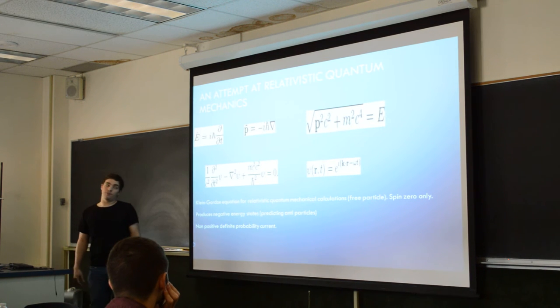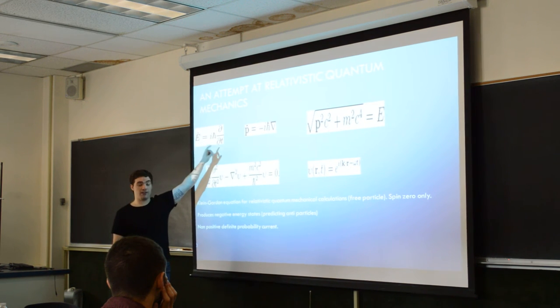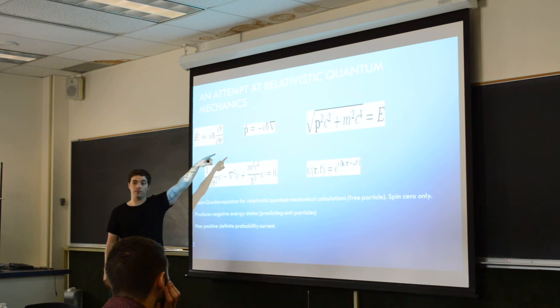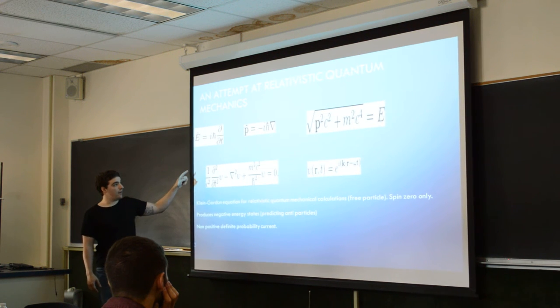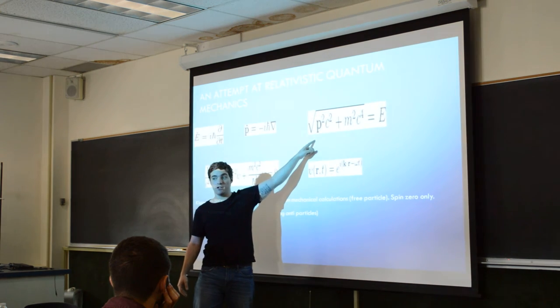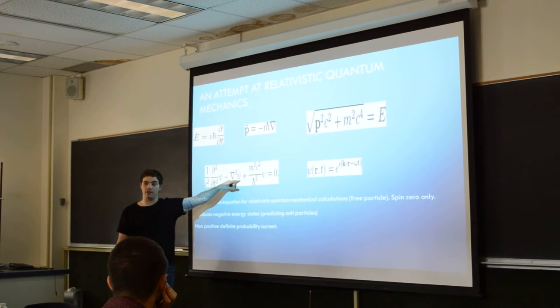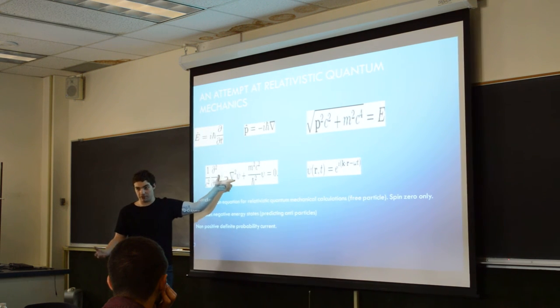The Klein-Gordon equation is a relativistic wave equation. It was basically an attempt to unify relativity and the Schrödinger equation together. You can take your regular energy operators and momentum operators from the Schrödinger equation, plug those into this relativistic energy equation, and do some algebra. You come up with this equation right here, but this is neglecting a potential, so basically a free particle.